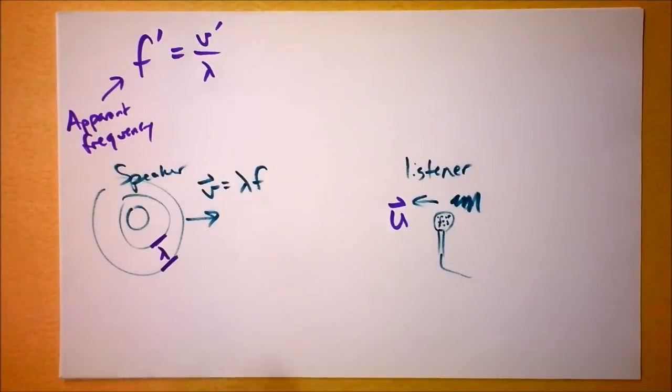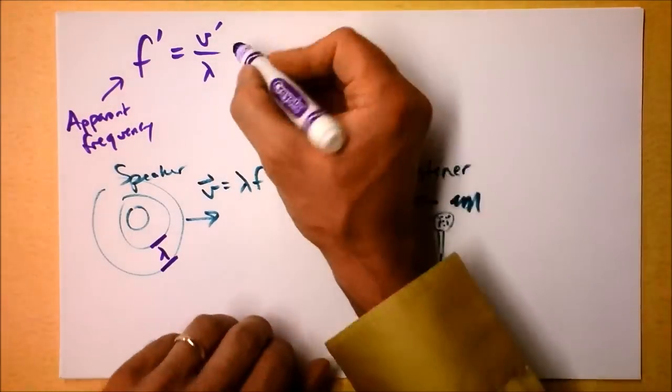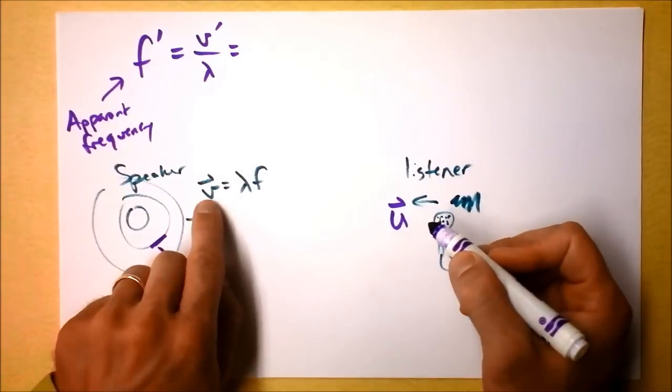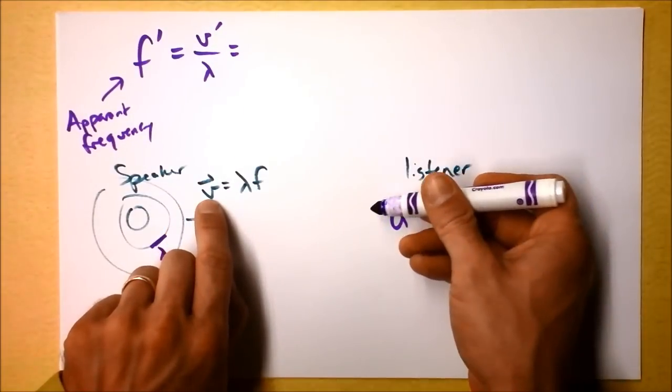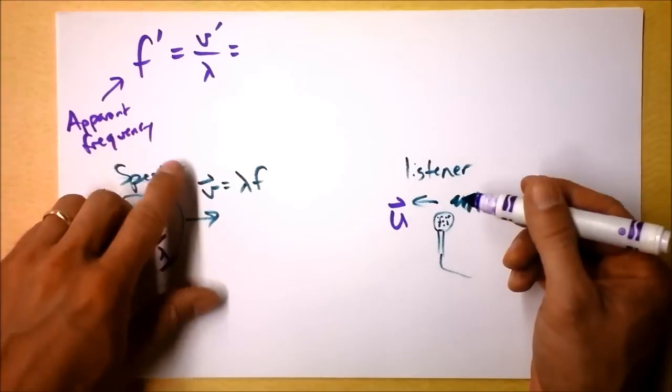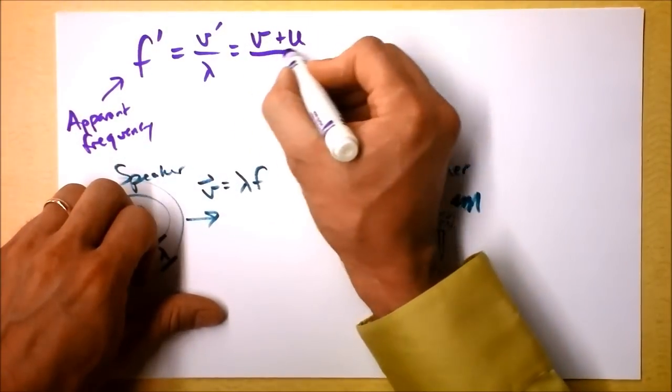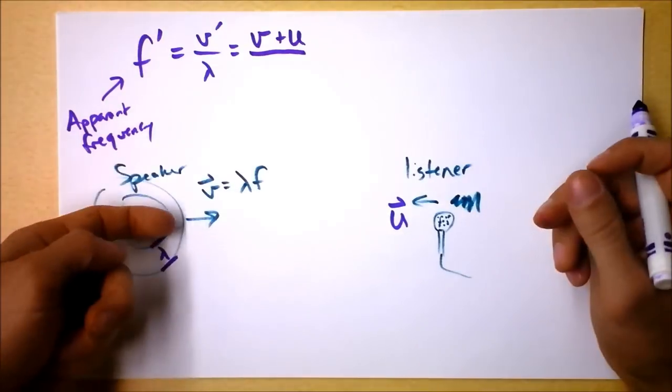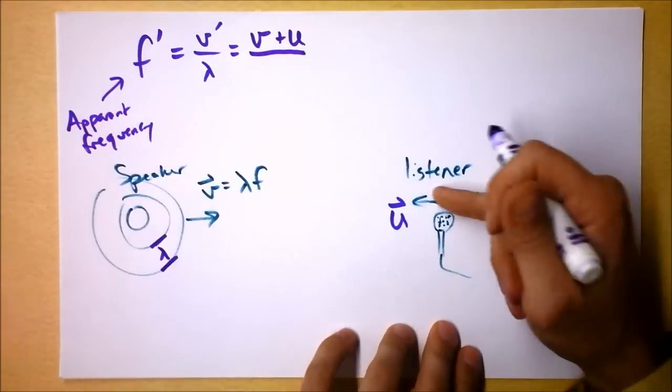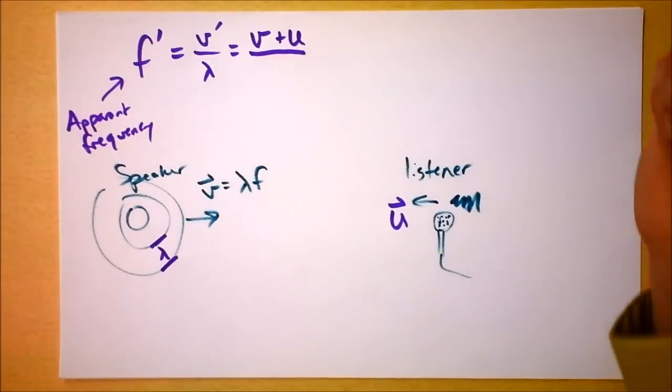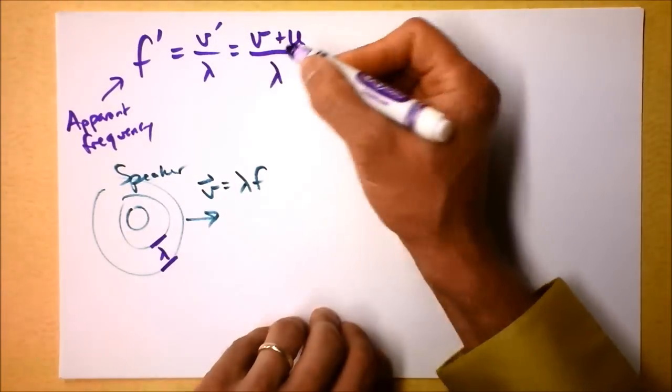So there's no such thing as a lambda prime in this case. Lambda is lambda is lambda. But you know that the apparent velocity of this wave is not going to be V because you're moving towards it with the speed U. So the apparent velocity is going to be V plus U.